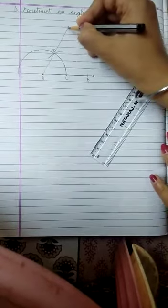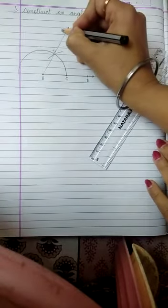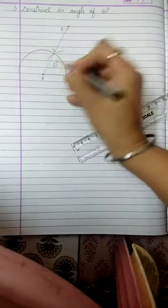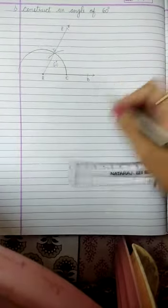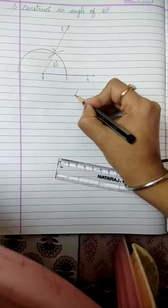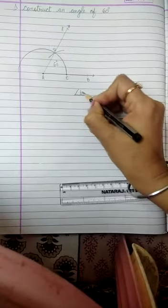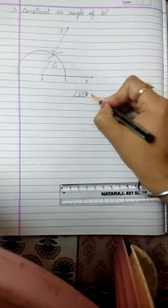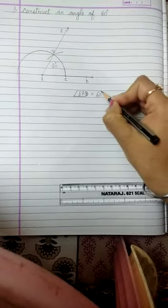So this is your 60 degree angle. Here write down answer: angle EAB is equal to 60 degrees.